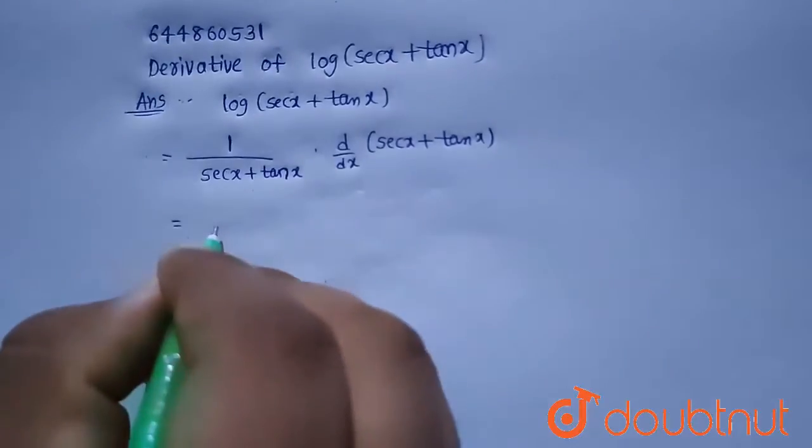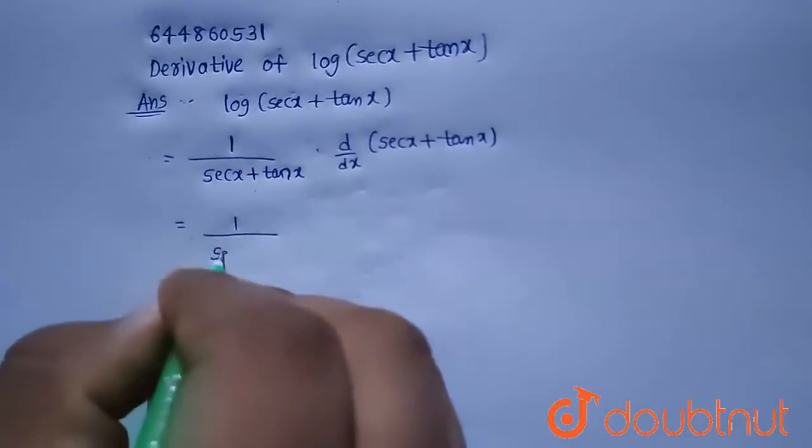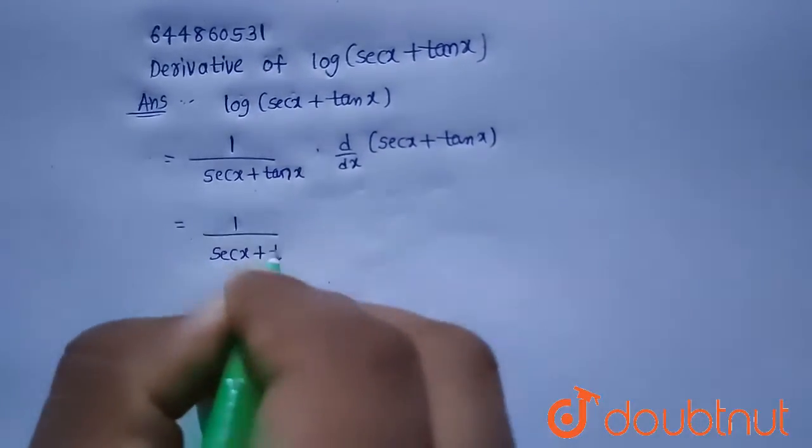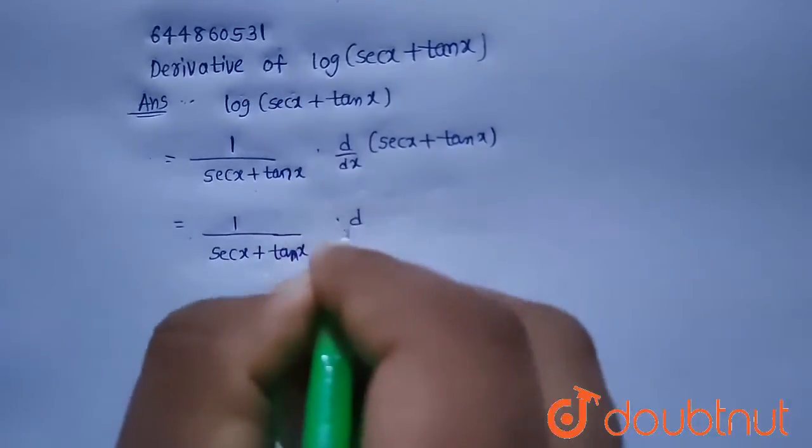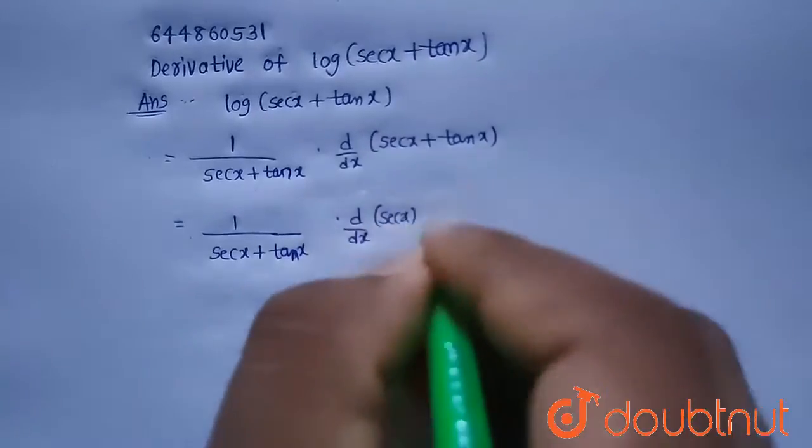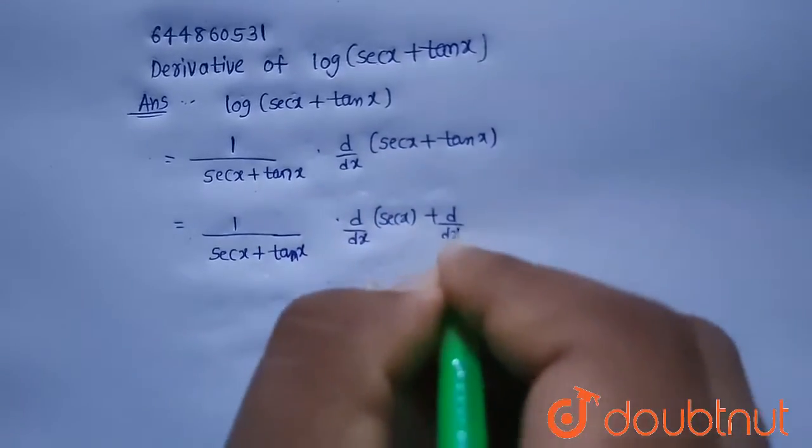So that is nothing but 1 by secant x plus tan x multiplied with d by dx of secant x plus d by dx of tan x.